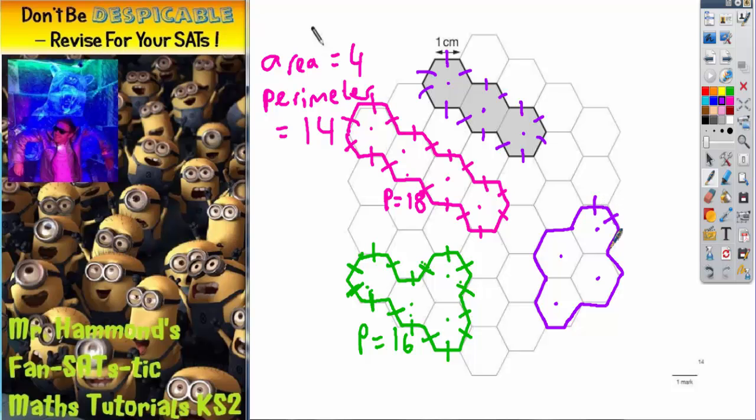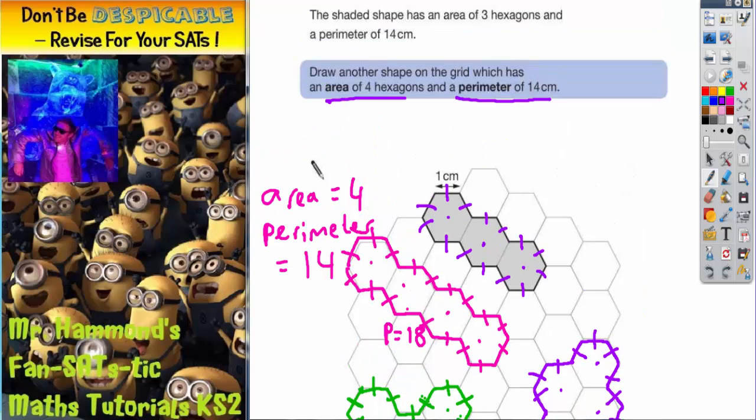So let's have a look: 1, 2, 3, 4, 5, 6, 7, 8, 9, 10, 11, 12, 13, 14. So there we've done it. We've found a shape with an area of 4 and a perimeter of 14, which is what we've been asked for in the question.